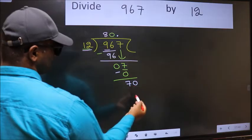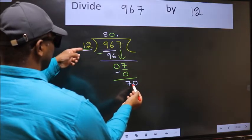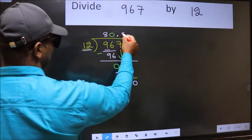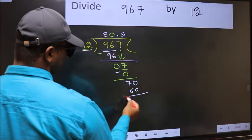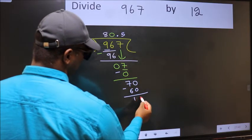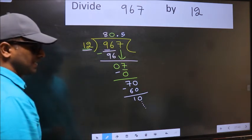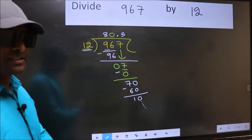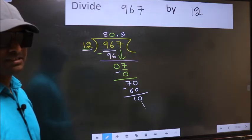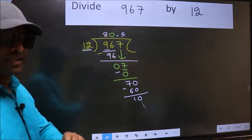So 70. A number close to 70 in 12 table is 12 times 5 is 60. Now you should subtract, you get 10, and continue the division. I am not doing that. Did you understand where the mistake happens? You should not do that mistake.